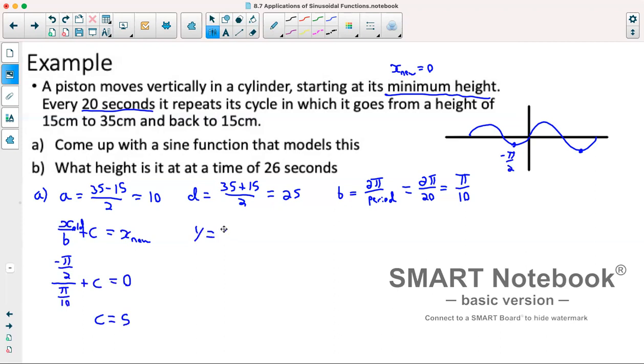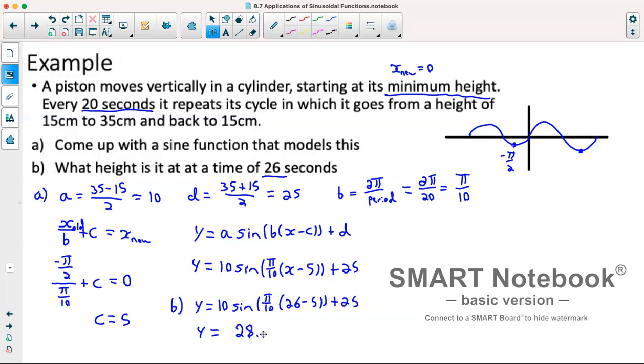So our equation which takes the form of y equals a sine of b x minus c plus d will now look like 10 sine of our b value of π over 10 times x minus our c value of 5 plus our d value of 25. Now for part b we are figuring out where it is at a time of 26 seconds, so we're just going to substitute 26 in for x. So we've got y equals 10 sine of π over 10 times 26 minus 5 plus 25. And making sure we're in radians and entering that in our calculator tells us at that point will be a height of 28.09 centimeters.